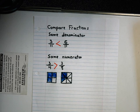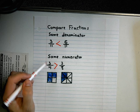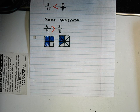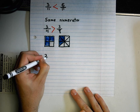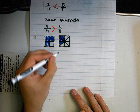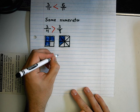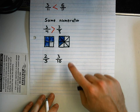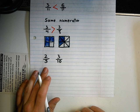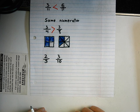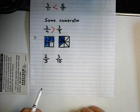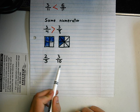Now it does get a little trickier when we don't have the same denominator or numerator. Let's say I have two fifths and three tenths. One might be tempted to say well the three and the ten are bigger, so I know that two fifths is less than three tenths. But I don't have the same denominator or numerator so I can't really figure that out. So what I'm going to do is I need to find the same denominators.